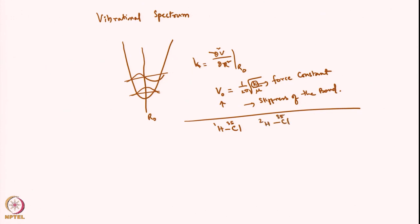When I measure the IR spectrum of these, what I get is the fundamental frequency. For HCl (H-1, Cl-35), this is ν̃0 = 2885.1 cm⁻¹, since we are measuring in wavenumbers (centimeter inverse). For DCl (D-2, Cl-35), it will be 2091.1 cm⁻¹. So I know the value of ν̃.